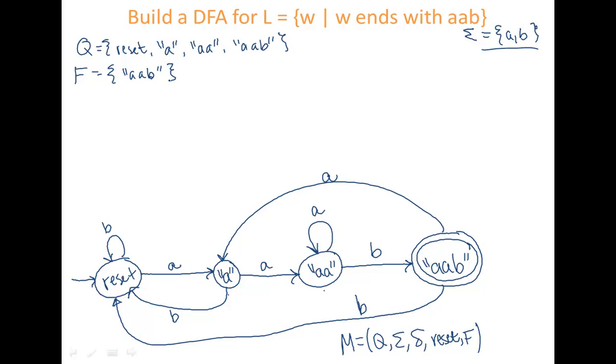So I said I need to define delta, and I do. Let's make a table. I still have these symbols, A and B, and then these are my states: reset, A, AA, and AAB. If I'm in the reset state and I see an A, I go to state A. And if I'm in reset and I see a B, I go back to reset.